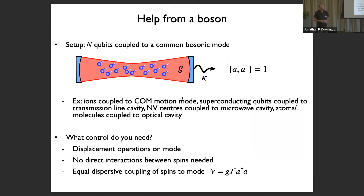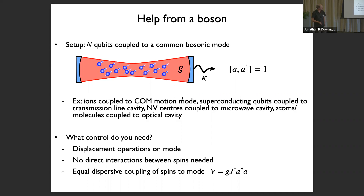We're going to get some help from bosons by coupling our spins to a bosonic mode with creation and annihilation operators a† and a. This doesn't have to be an optical mode — it could be ions coupled to a motional mode, NV centers coupled to microwave modes, or molecules coupled to an optical cavity. The control we consider is the ability to do displacement operators on the mode, with no direct spin-spin interactions needed, and a dispersive coupling described by a Hamiltonian with coupling strength g involving J_z and a†a.